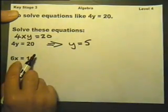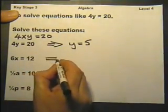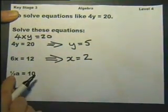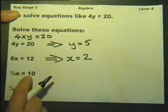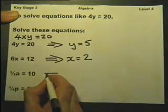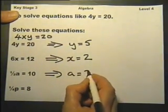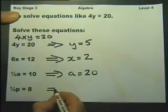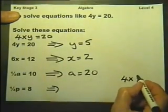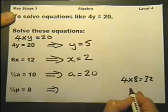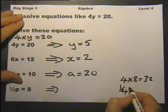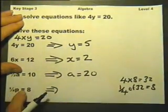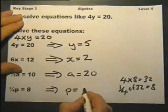6x means 6 times something equals 12. 6 times 2 is 12, so x must be 2. A half of something is 10; a half of 20 is 10, so a is 20. A quarter of something is 8. Knowing that 4 eights are 32, a quarter of 32 is 8, therefore p must be 32.